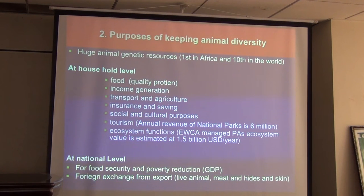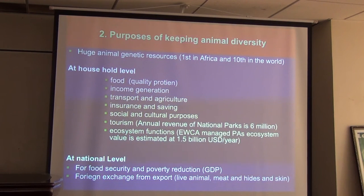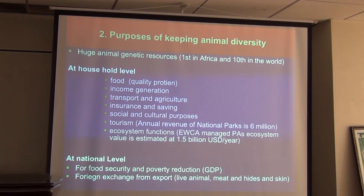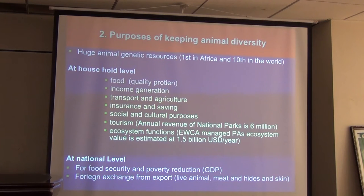At household level, animals are the source of food — especially quality protein and essential amino acids — and a source of income generation. In pastoralist areas, animals support 60% of the food people depend on, and in mixed crop-livestock systems, about 40%. For income, livestock support 40 to 80% of income generated in agricultural societies, very high in pastoral and agropastoral systems and relatively lower in mixed crop-livestock systems.